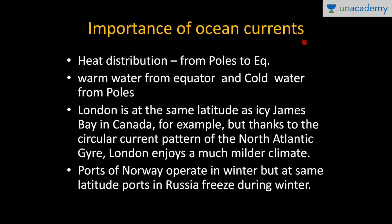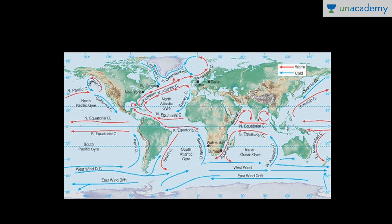What is the importance of ocean currents? First, ocean currents distribute heat from the equator to the poles. When warm water moves from the equator to the poles and cold water moves from the poles to the equator, heat is redistributed. A key example: London is at the same latitude as James Bay in Canada, but the climate in London is much milder. Why? Because of the North Atlantic Drift — a warm current that has a moderating influence on London's region. These two areas at the same latitude have different climatic conditions because of this ocean current.